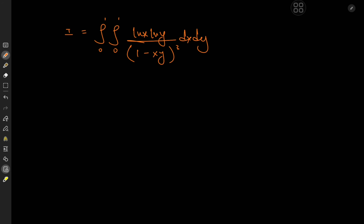This is quite nice because x is bound between 0 and 1 and y is also bound between 0 and 1. So that means their product is also bound between 0 and 1, which means we could expand 1 over (1 minus xy) as the geometric series — that is, the sum over k from 0 to infinity of x to the k times y to the k.